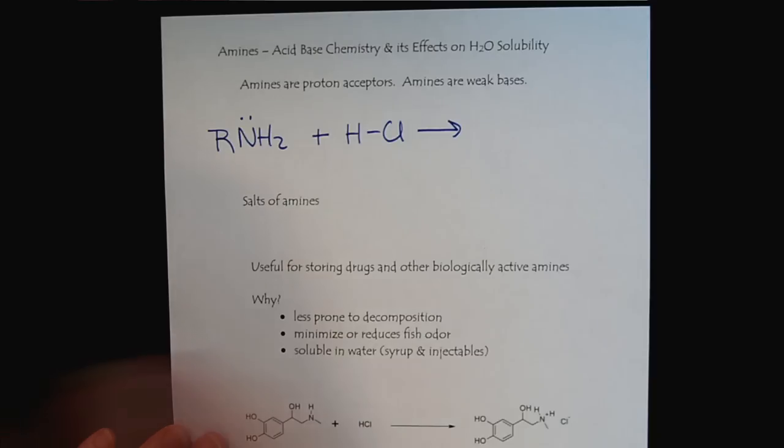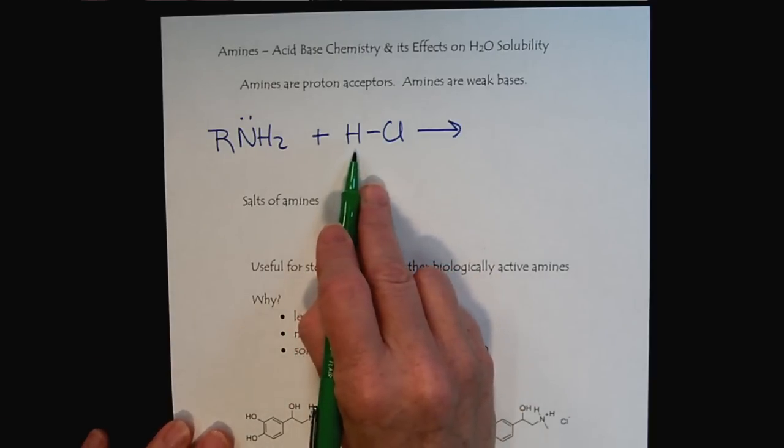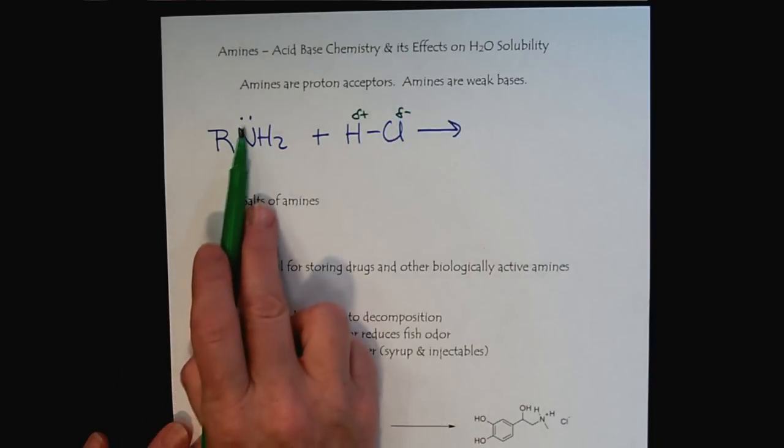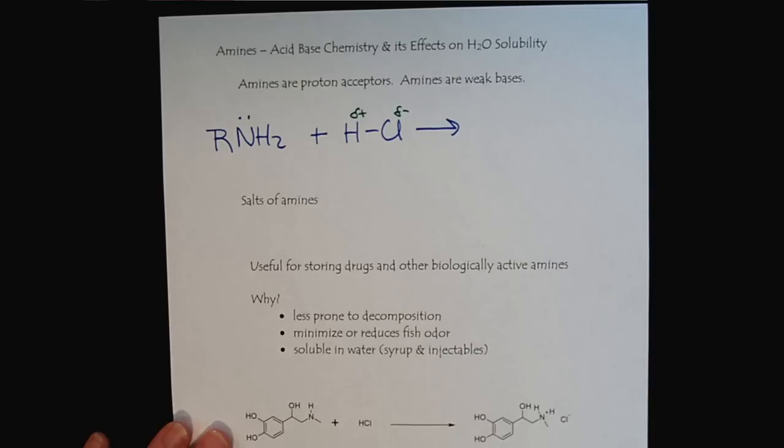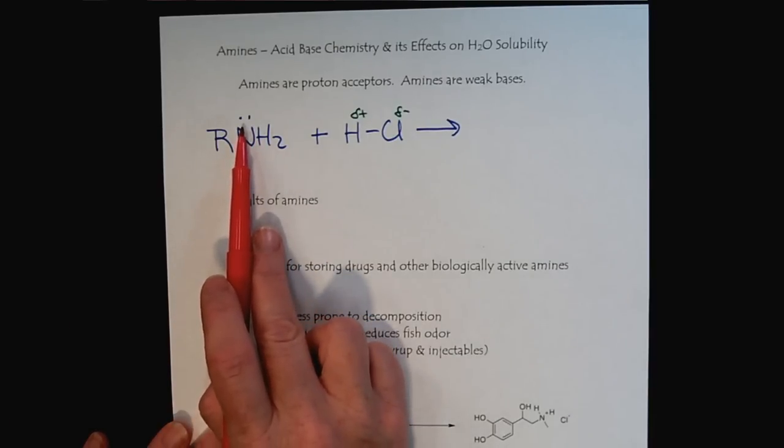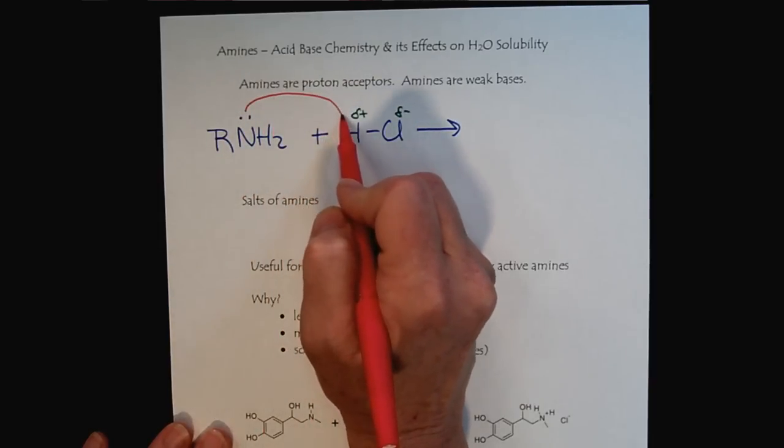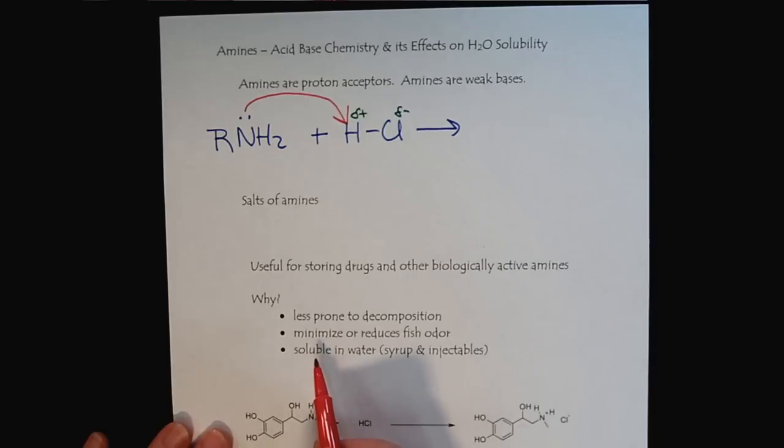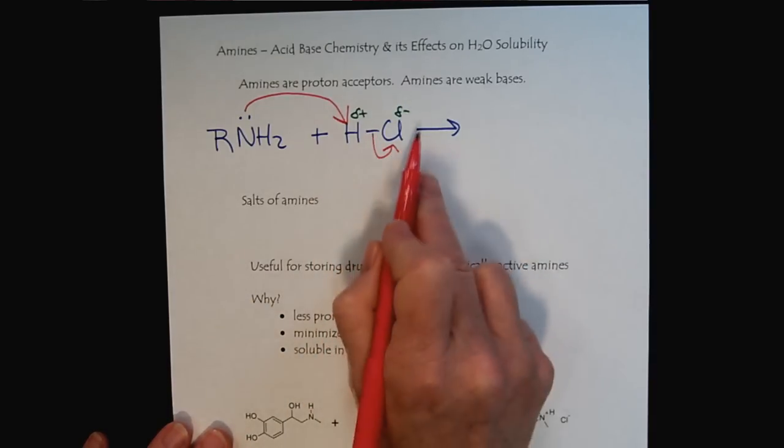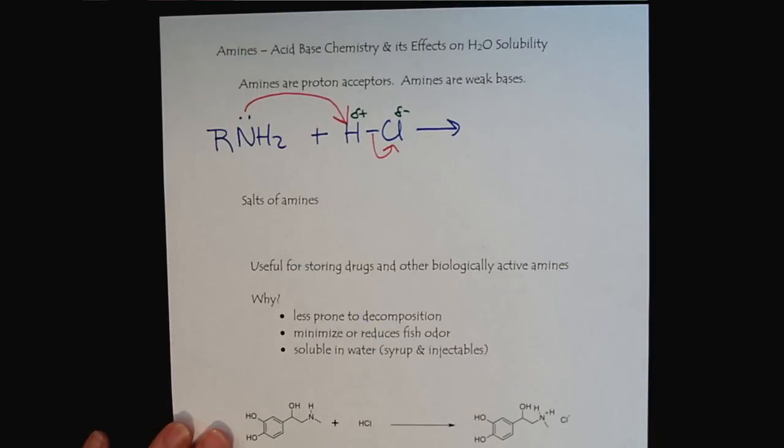If we think about electronegativity and polarity, we know there's a partial positive and partial negative here, and we have some lone pair electrons. Electrostatically, even though this is neutral, the negative charge of those electrons is attracted to the positive charge of the hydrogen ion. Hydrogen can only form one bond, and chlorine is electronegative, so we get this reaction occurring.